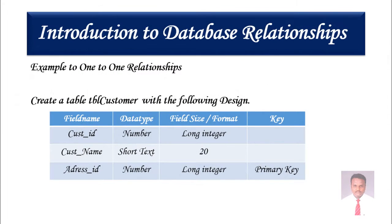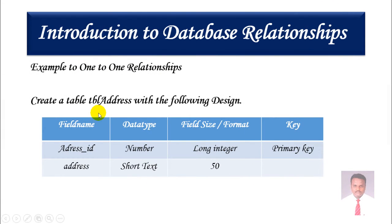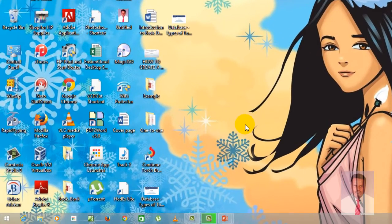Now we are going to see an example by creating two tables. The first table is TBL_customer with fields: customer ID (number, primary key), customer name (short text), and address ID (number). The second table is TBL_address with fields: address ID (number, primary key) and address (short text, field size 50). To do this, open Microsoft Access 2013 or 2010 via Start > All Programs > Microsoft Office > Access 2013.